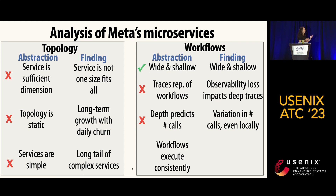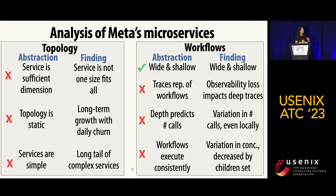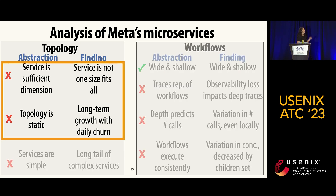Finally, we looked at the assumption that workflows execute consistently each time they operate, and we found there's variation in concurrency — the dependencies between children — but that can be decreased when we consider more information from our request workflows. You can see more details about all of this in the paper; I'll focus on a subset of findings, starting with two from topology.